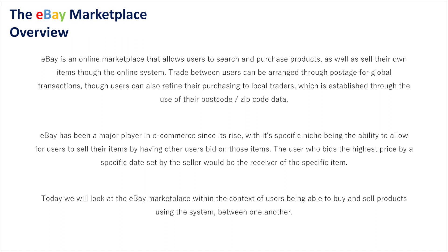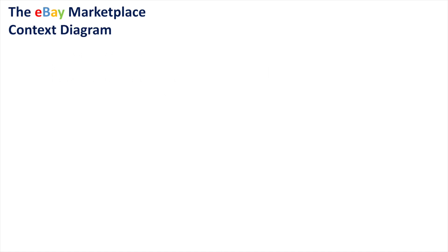The user who bids the highest price by a specific date set by the seller would be the receiver of that item. Today, we're going to look at eBay's marketplace setup within the context of users being able to buy products from one another, as well as its e-commerce setup of buying products through its actual system. Let's take a look at this first as a context diagram.